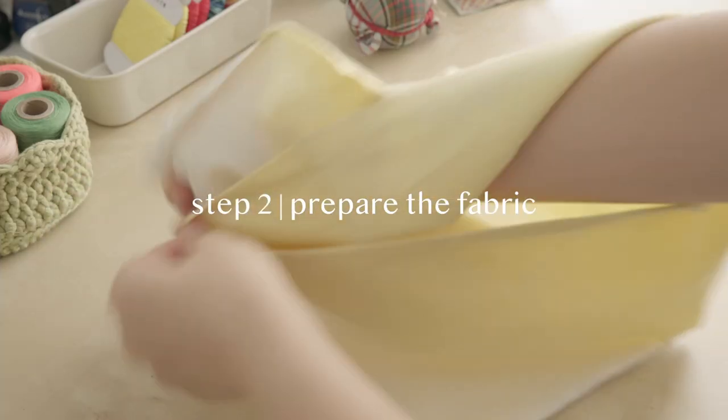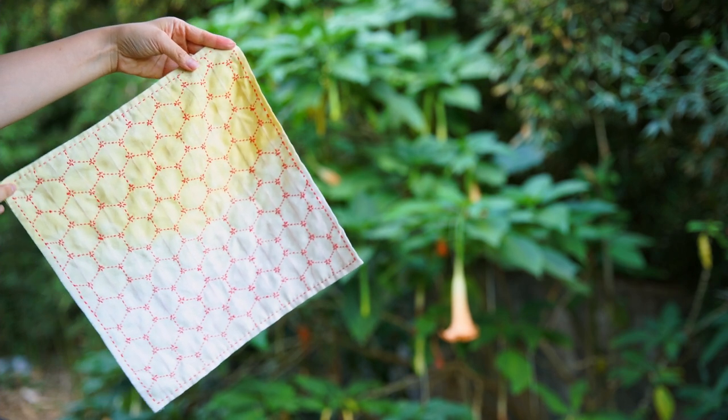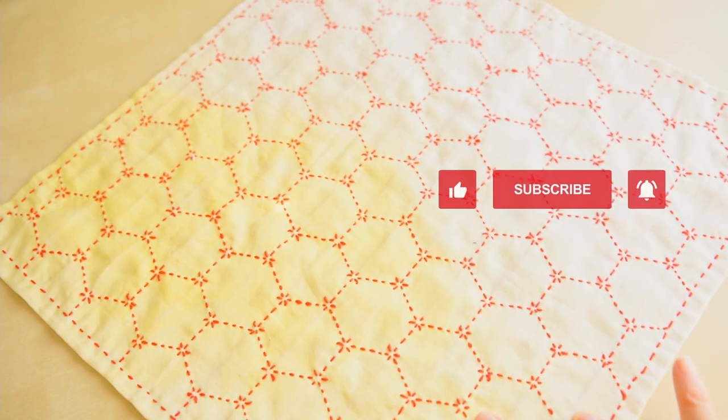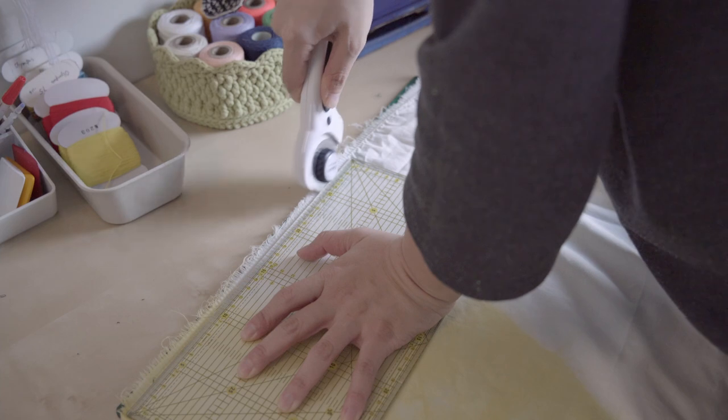Step two, prepare your fabric. Take this piece of tsuno kiko horned turtle shell stitched hana fukin for example. It is measured 33 by 33 cm with 1 cm edge on each side.